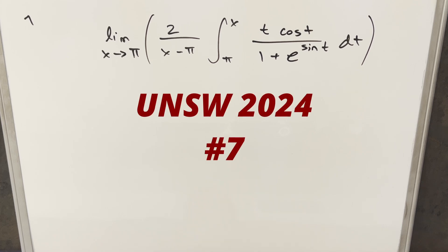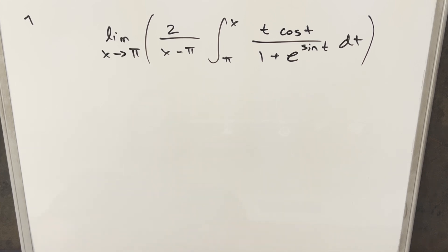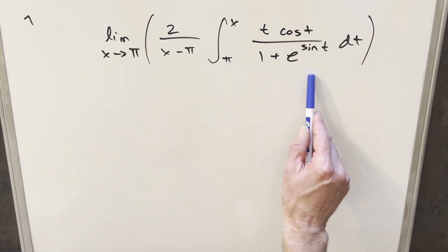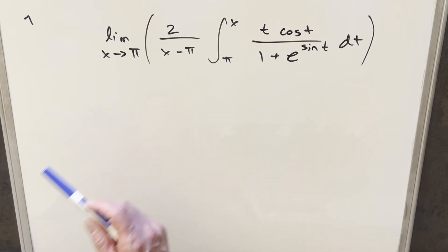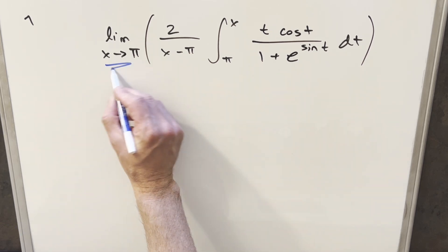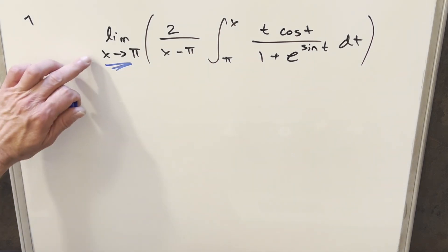We have something interesting from the UNSW integration competition 2024, number 7. We have the limit as x approaches pi of 2 over x minus pi times the integral from pi to x of t cosine t over 1 plus e to the sine t dt. Even though we do have an integral here, it's actually more of a limit problem, and the limit is the thing we need to deal with first.